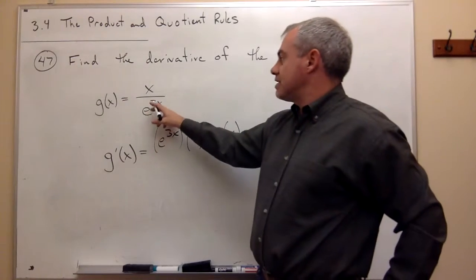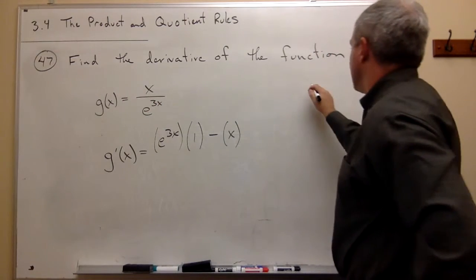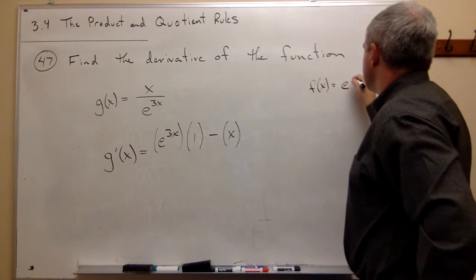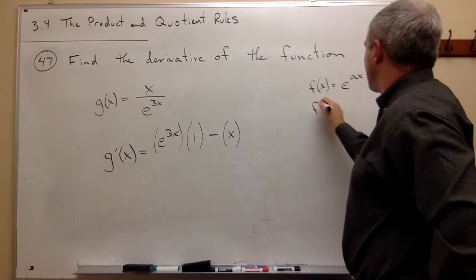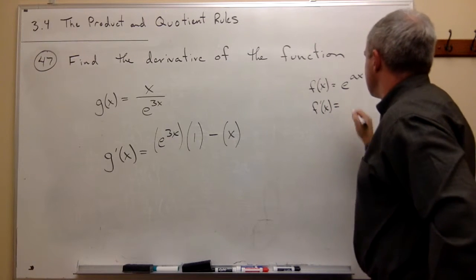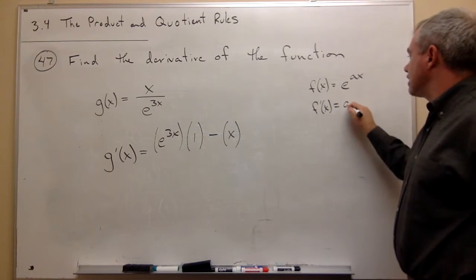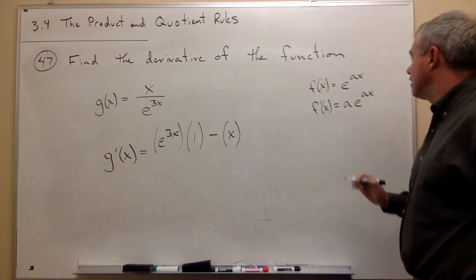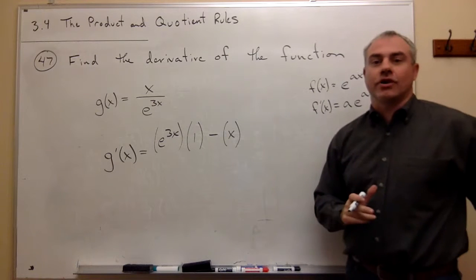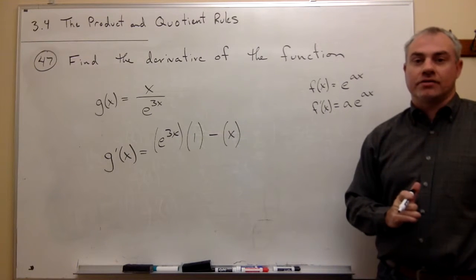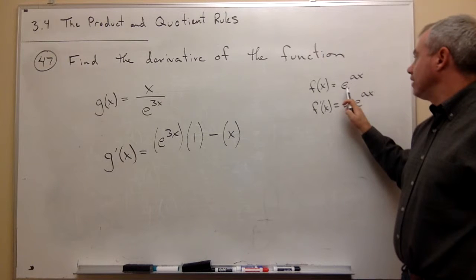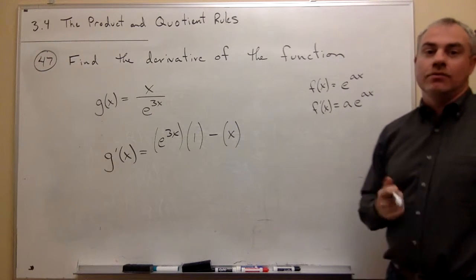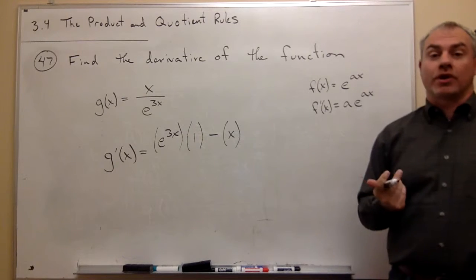Now, the derivative of e to something times x, like if f of x is equal to e to the ax, then f prime of x is equal to, well, the a just gets written out in front, and then you still have e to the ax. So you just get an extra factor of a coming out in front. Notice that if a is 1, then the derivative of e to the x is 1 e to the x, which is perfect, and so it even works when a is 1.